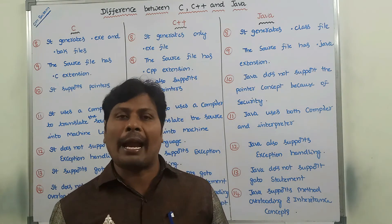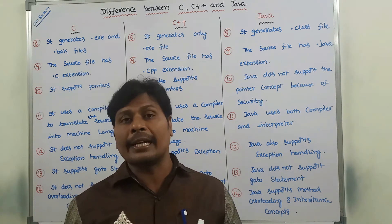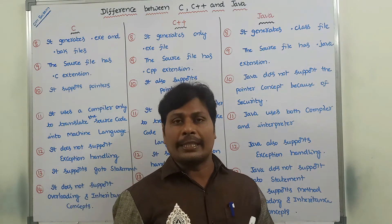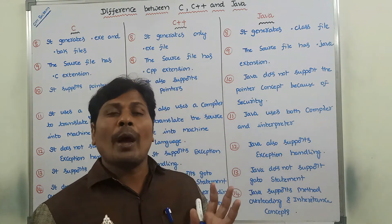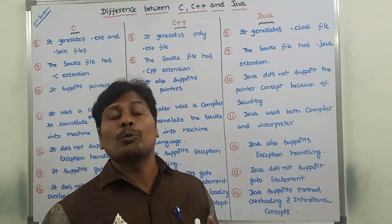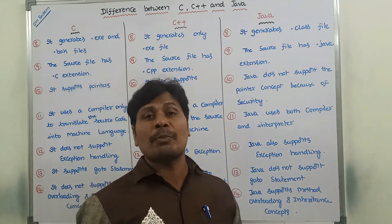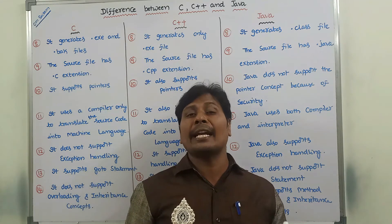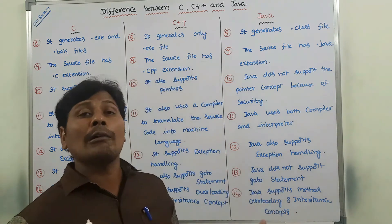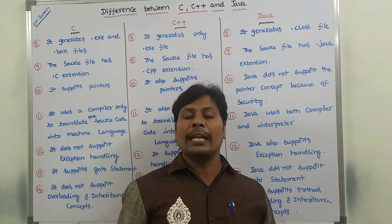C language does not support exception handling. Exception handling is nothing but handling errors — whenever an error occurs, an exception is raised. In C++ we use the exception handling mechanism when an error occurs. Java also supports exception handling through try, catch, and finally blocks.